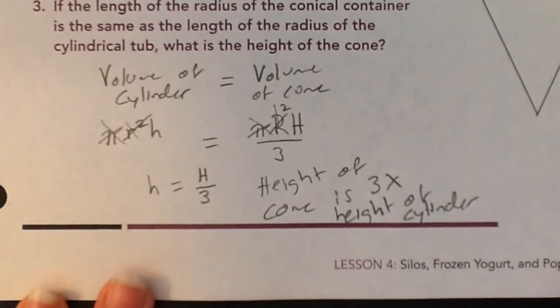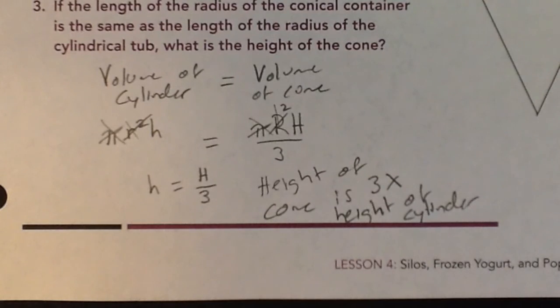Basically, if you wanted to have 2 containers that equal the same amount, one was a cylinder, one was a cone, they had the same radius, you would need a cone that's 3 times longer than a cylinder, probably not the most efficient shape.